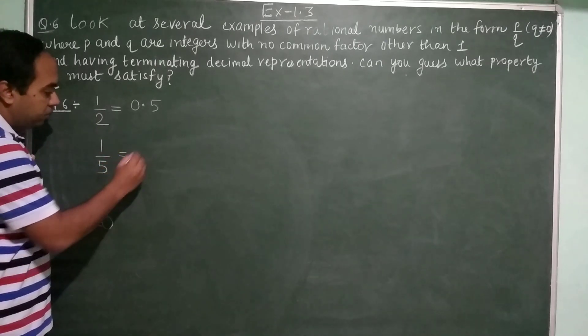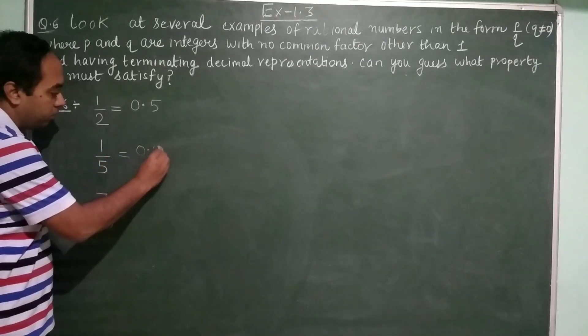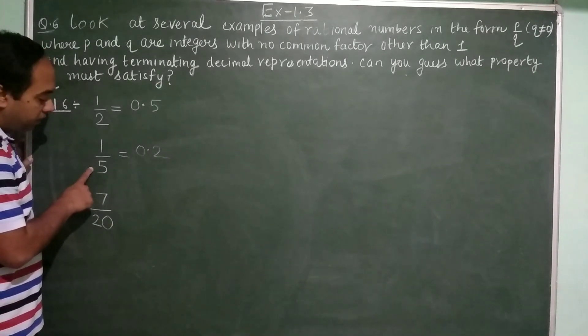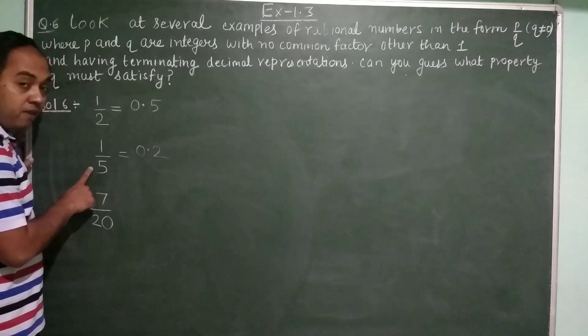Now divide 1 upon 5, how much you will get? 0.2. What is the denominator over here? What is the form of q over here? q is having prime factor 5.